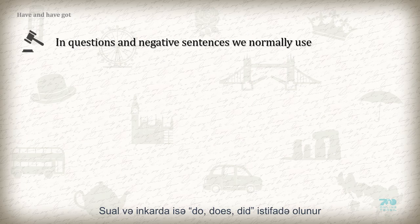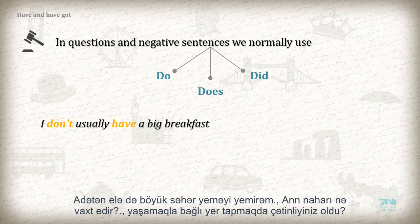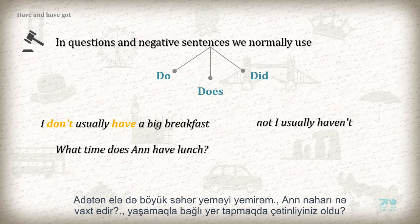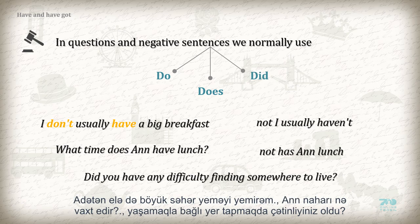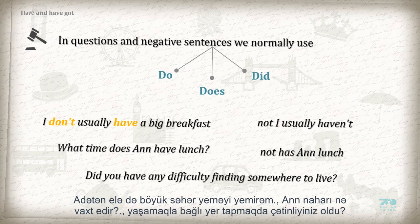In questions and negative sentences, we normally use do/does/did. I don't usually have a big breakfast. Not: I usually haven't. What time does Anne have lunch? Not: has Anne lunch. Did you have any difficulty finding somewhere to live?